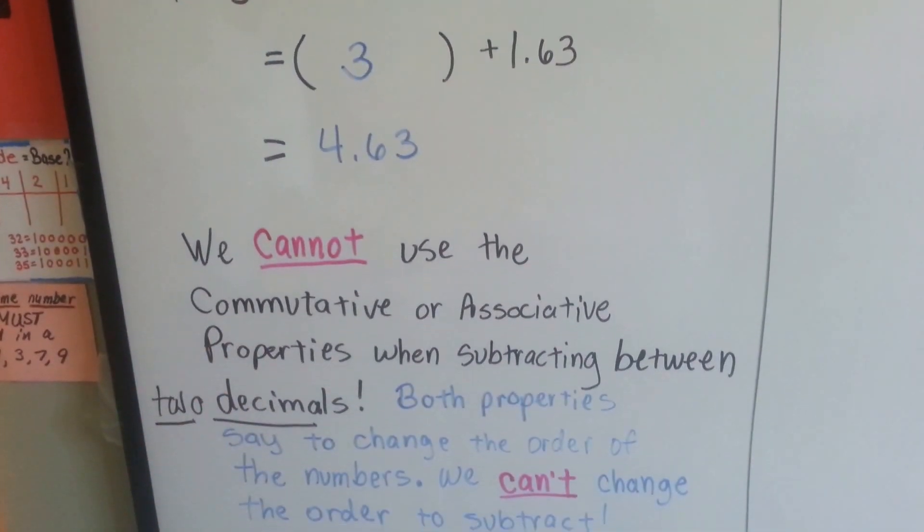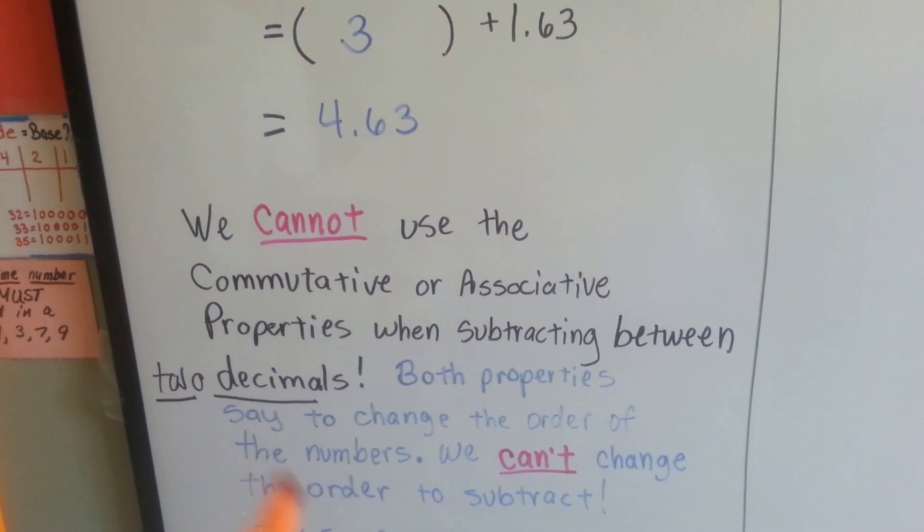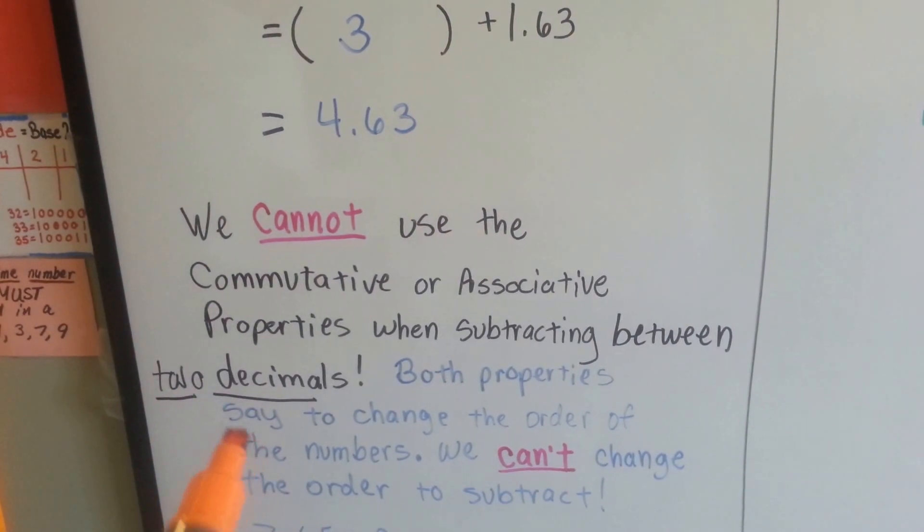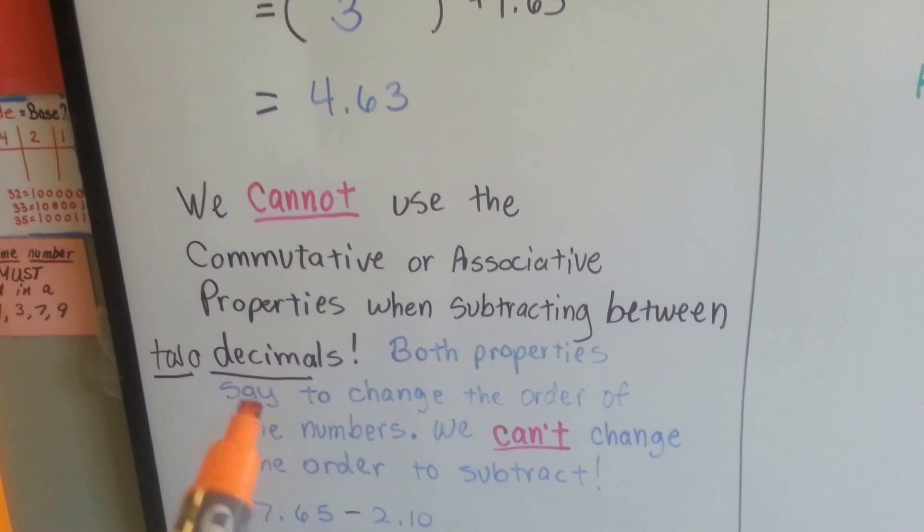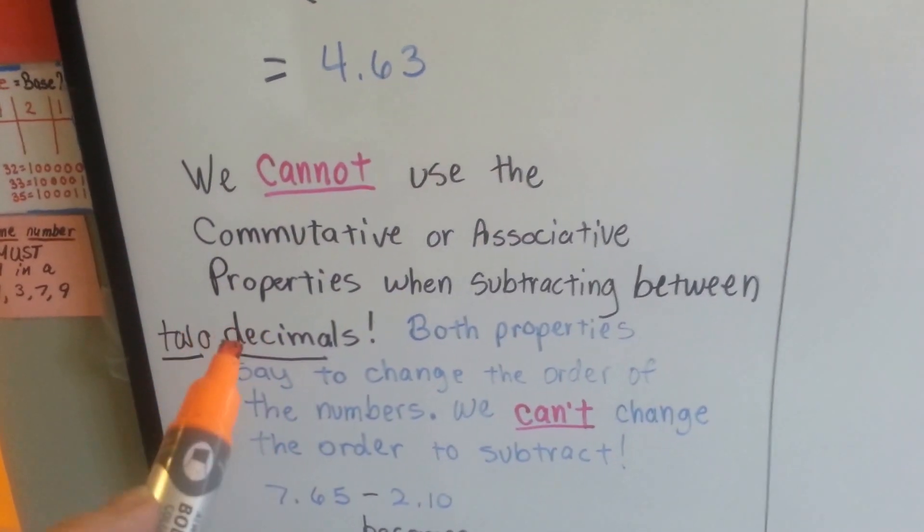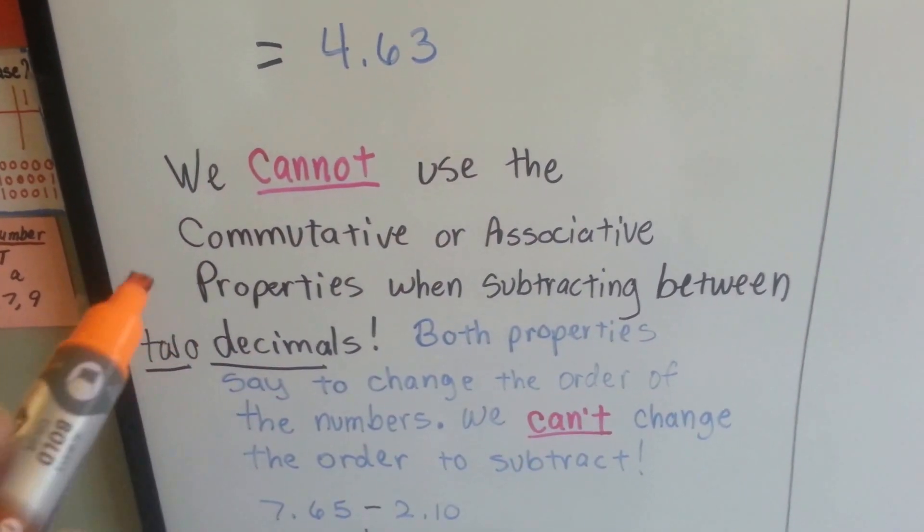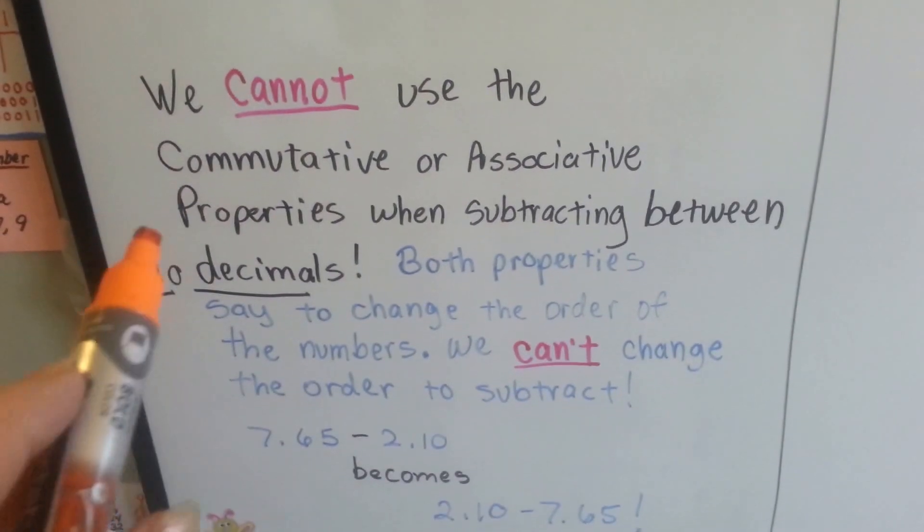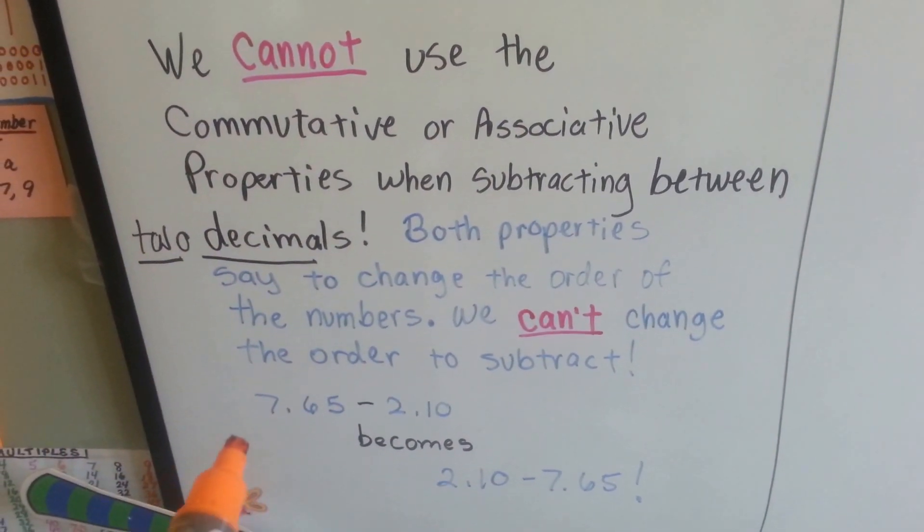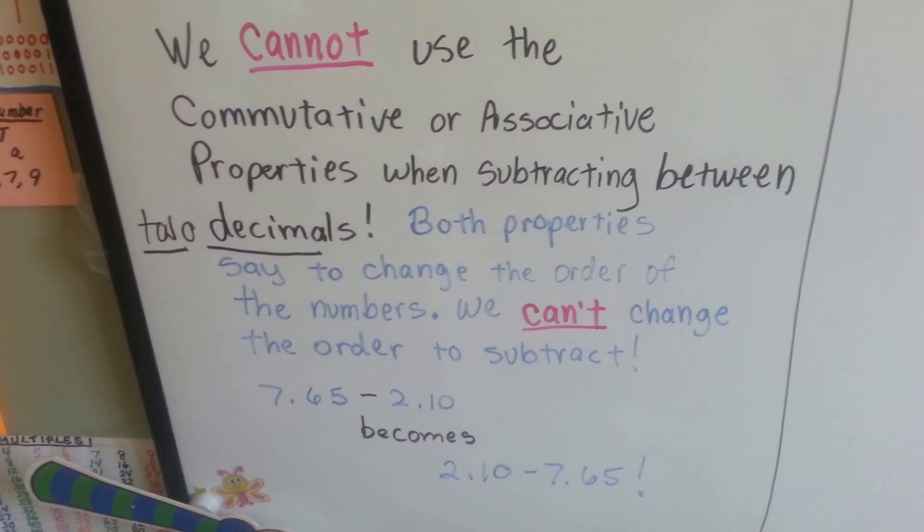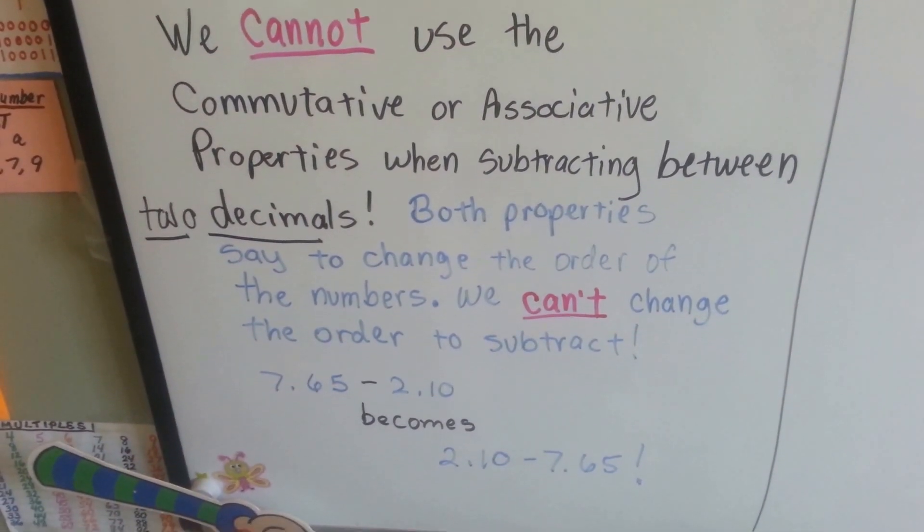Now we cannot use the commutative or associative properties when subtracting between two decimals. You could do it for 3, but you'd still have to remember to keep the first number, the largest number, up front. But you can't do it between two decimals, because both properties say to change the order of the numbers. And we can't change the order to subtract.